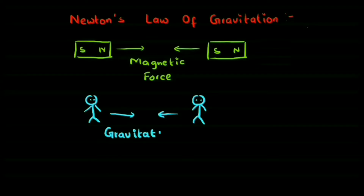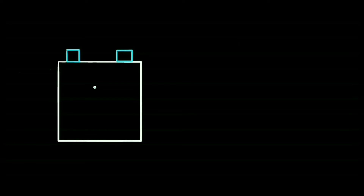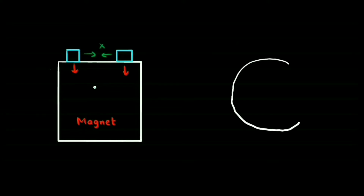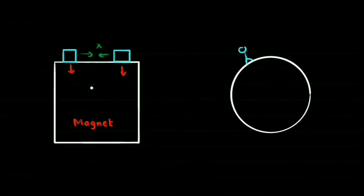Now we don't see this in our everyday life, like two humans attracting each other. That's because let's say we have a huge magnet and then there are two tiny magnets just above. These two tiny magnets on the surface of the big magnet are going to be attracted by this big magnet. As a result, these two tiny magnets cannot attract each other. Similarly, in case of our earth, the earth is acting as a huge magnet and these two tiny humans are attracted towards the center of the earth. As a result they cannot attract each other. So that's what gravitation is all about.